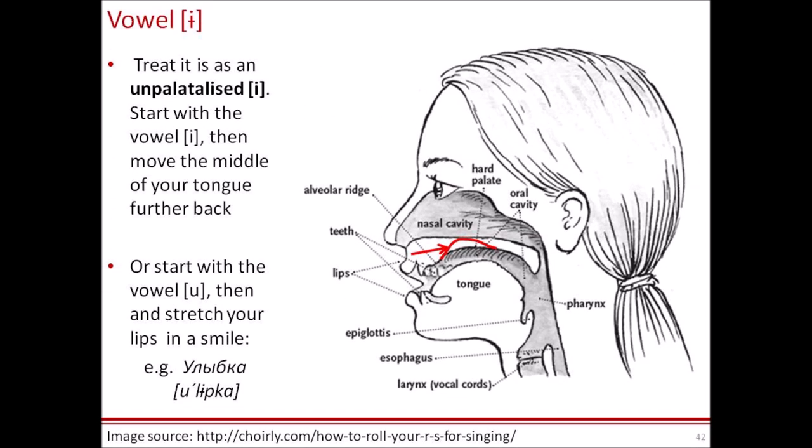There is one vowel sound that is challenging for most non-Russian-speaking singers. This is the sound Ы. This is basically the hard version of the vowel И. In speech, to make it, we stretch our lips sideways and we push our tongue backwards. However, in singing, as we all know, it is not recommended to push the tongue backwards. So you can try to produce the sound Ы starting from У. Let's start with У and then stretch our lips to the sides, so we will have У-Ы, like in the word улыбка, which means 'smile.'